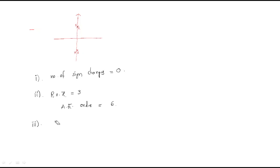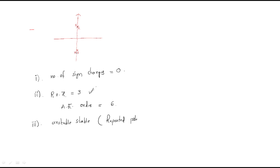Since there are no sign changes, one might think it is stable, but it is actually an unstable system. The reason is repeated poles on the imaginary axis. Repeated poles on the imaginary axis make the system unstable.